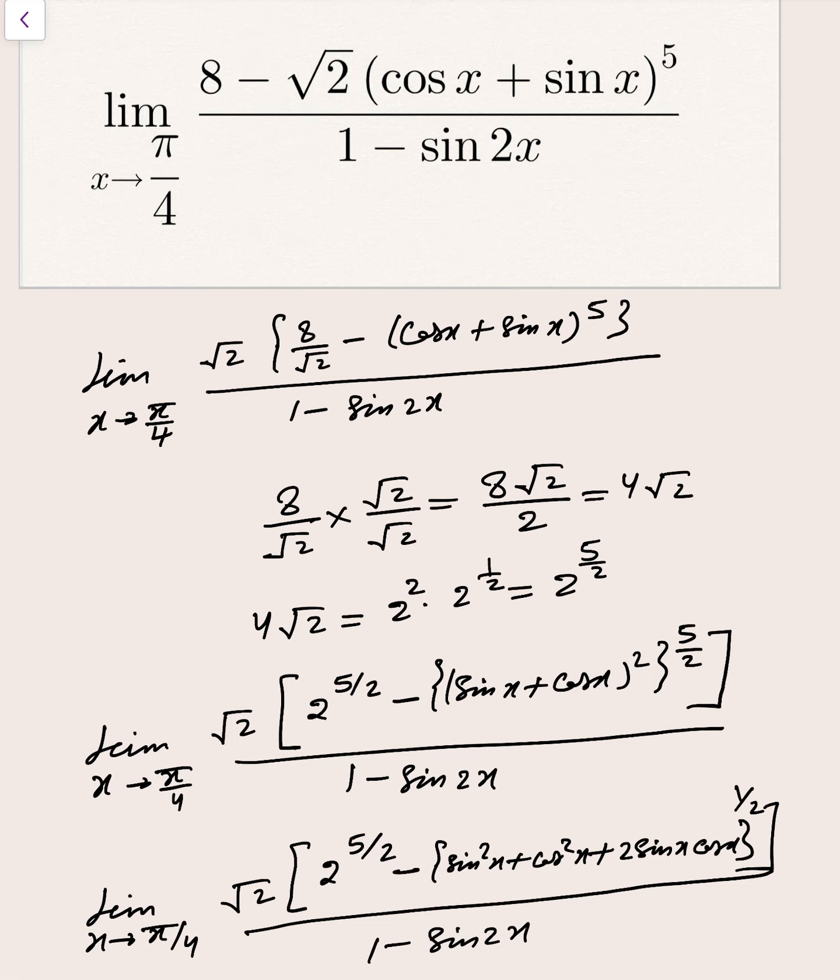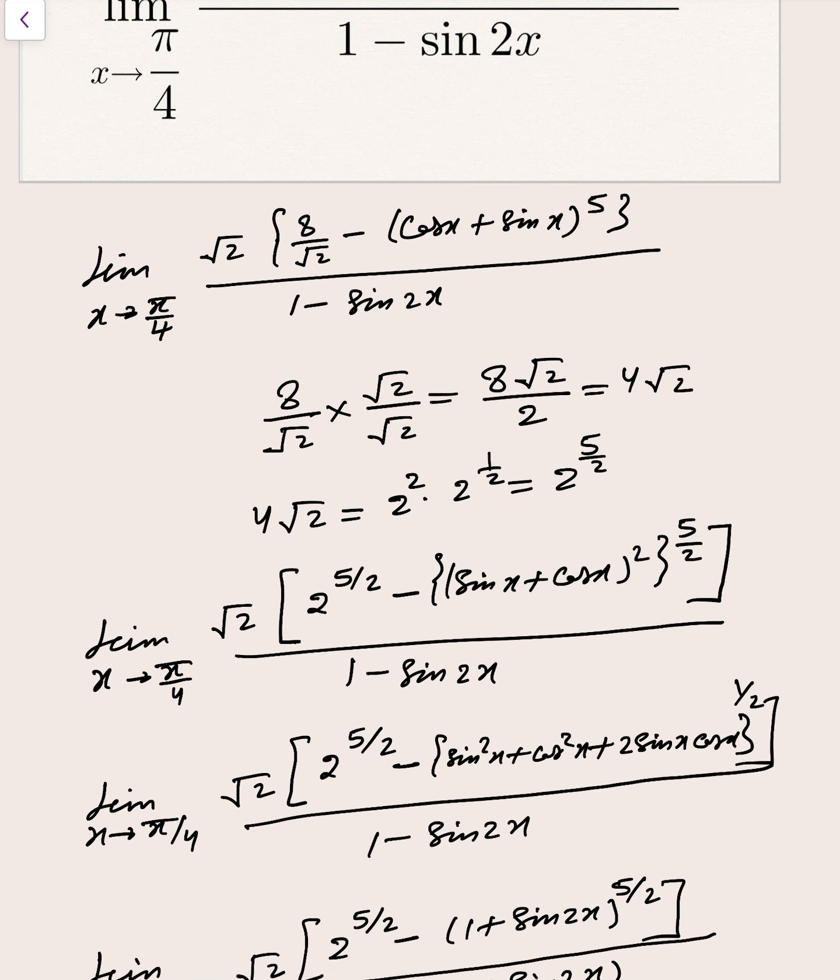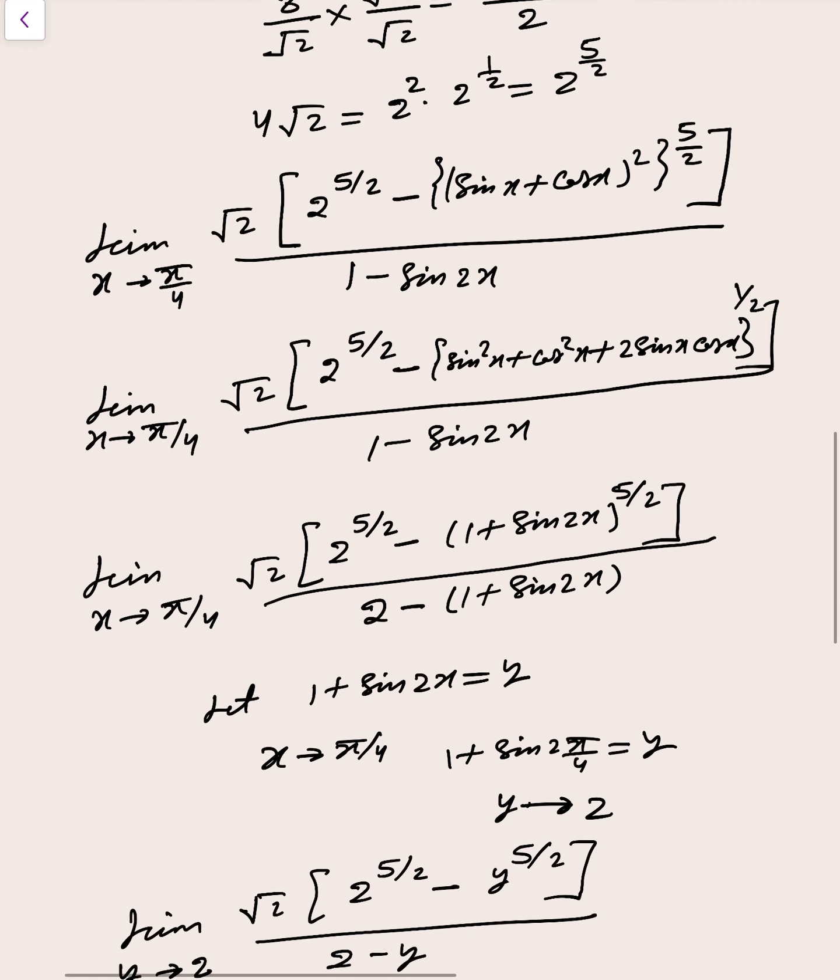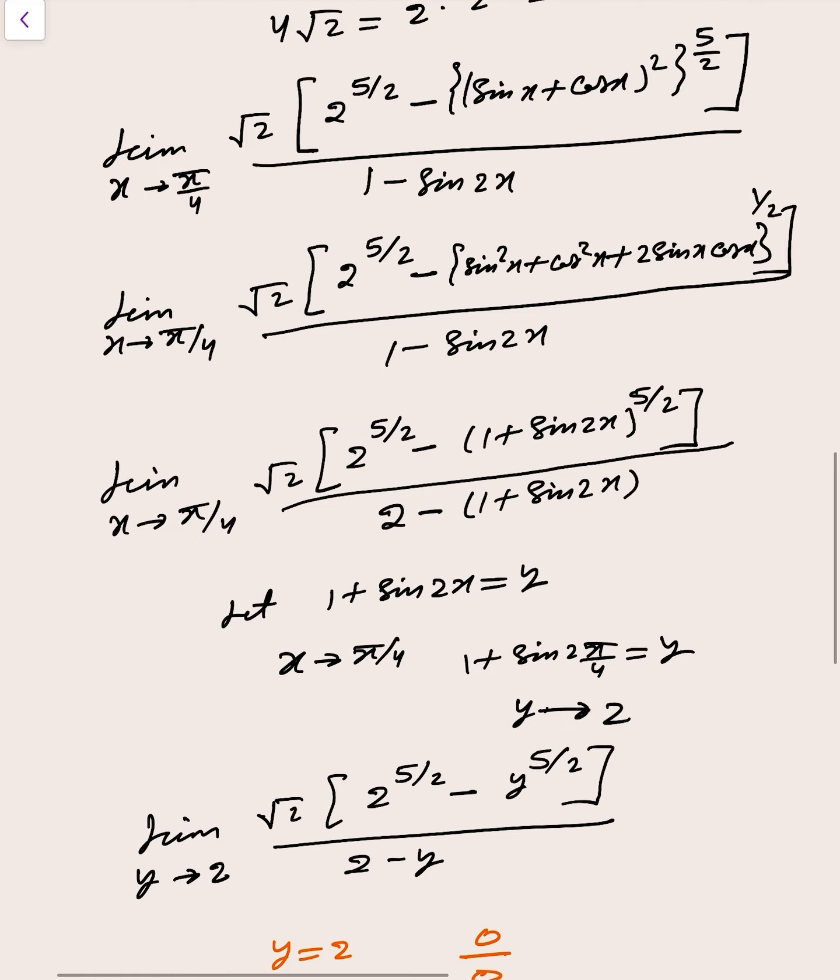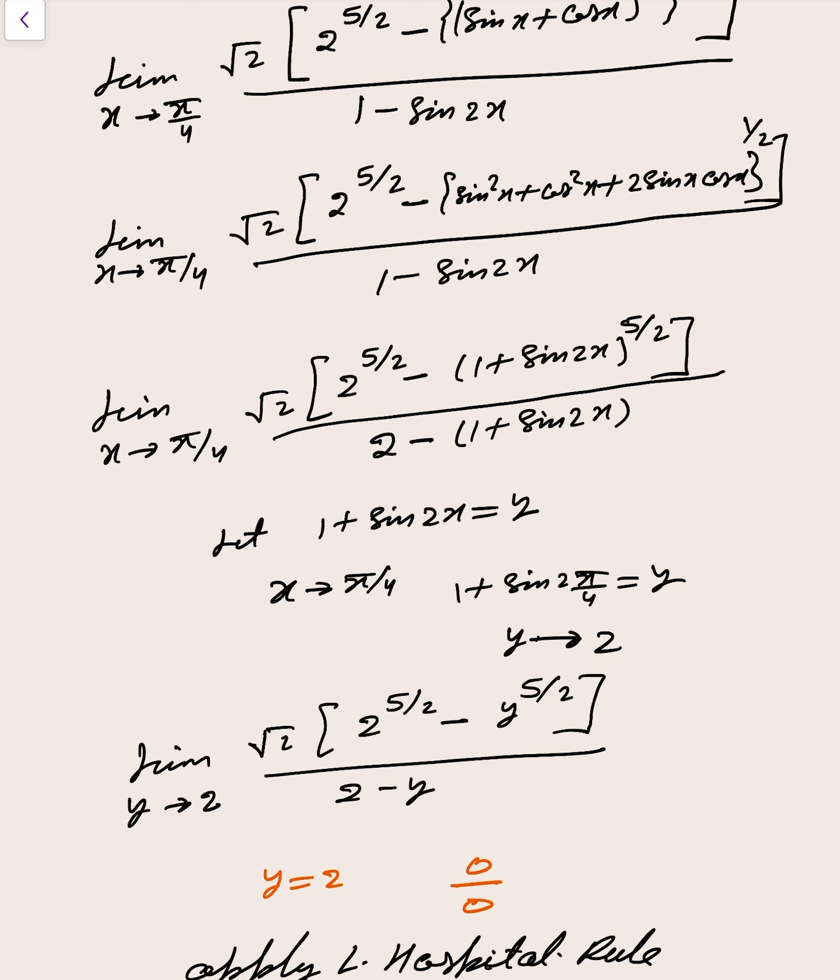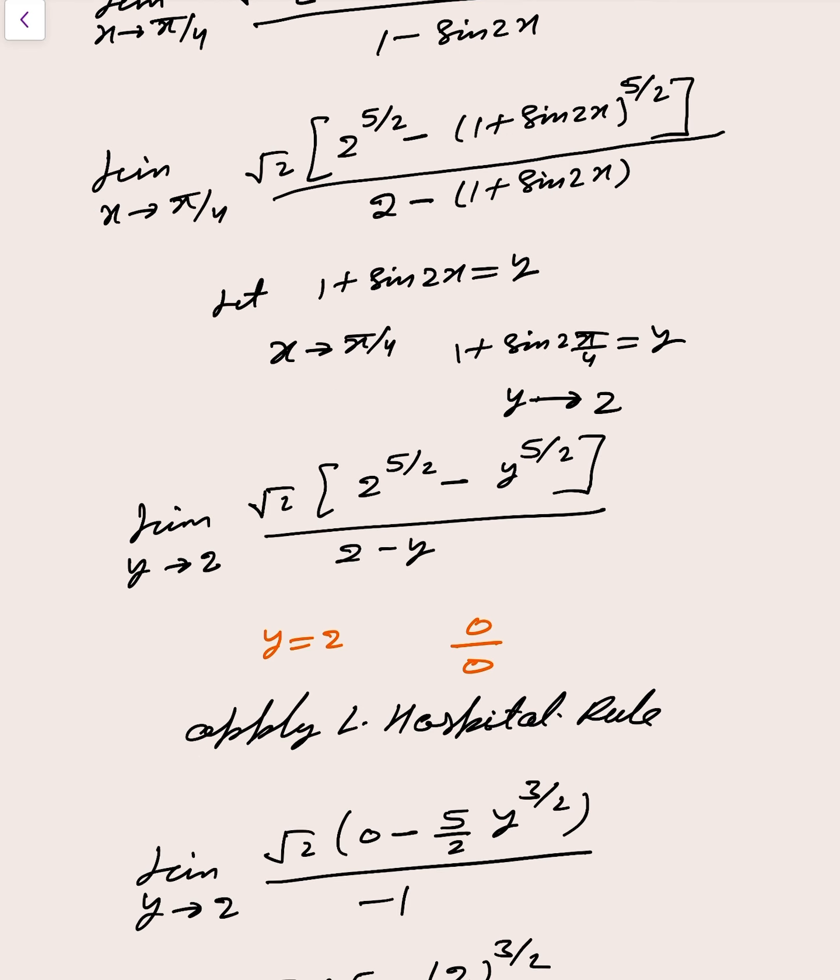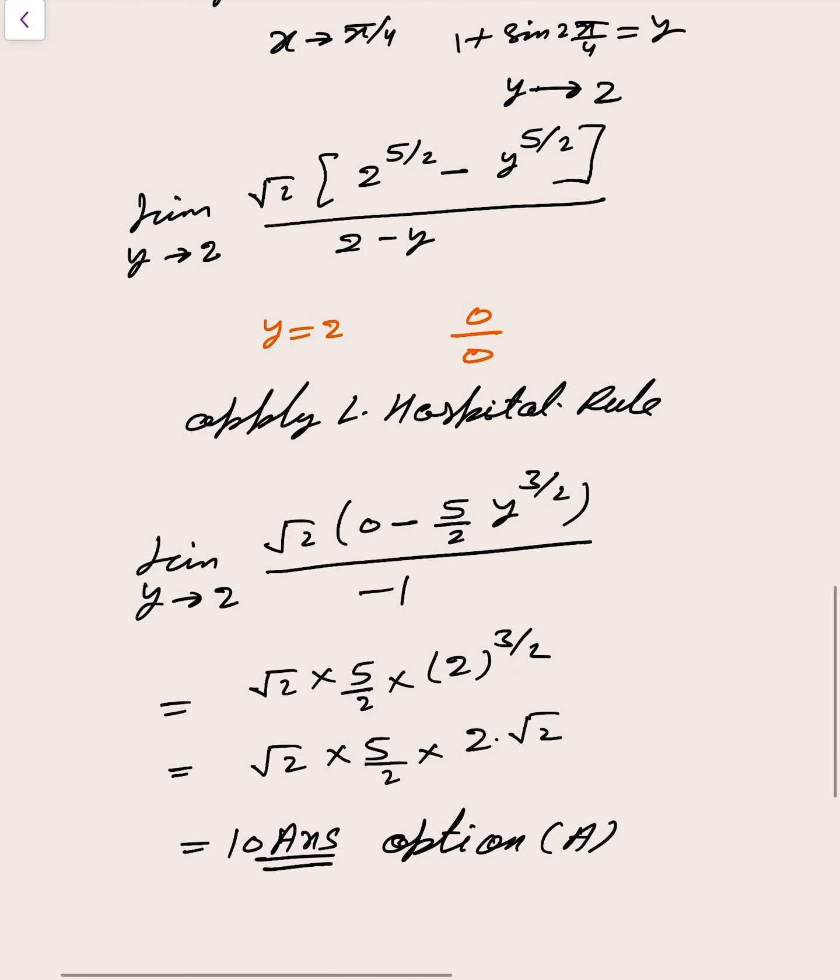First take root 2 common. After that, 8 by root 2 is written as 2 to power 5 by 2. And cos x plus sin x is also written in whole square to whole power 5 by 2. Then take 1 plus sin 2x as y. Because x tends to pi by 4, so y tends to 2. Then replace 1 plus sin 2x with y. And put y equal to 2, then 0 by 0 form. Then apply L'Hospital rule and find the answer.